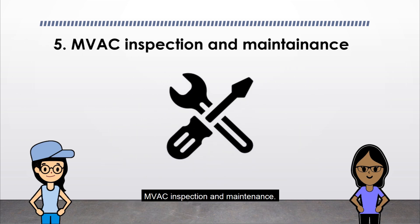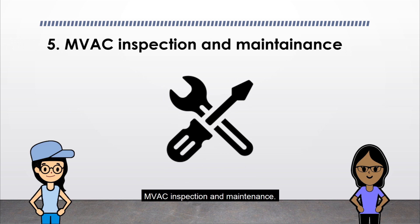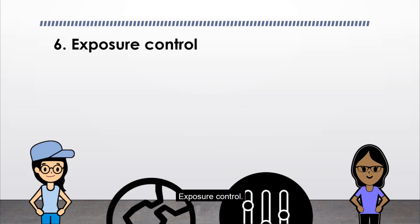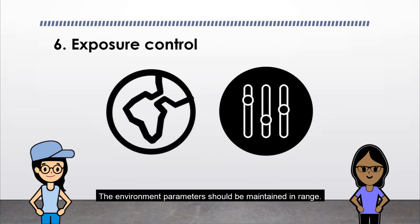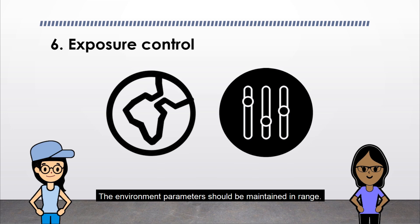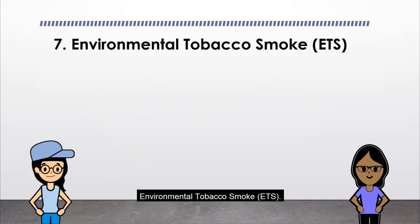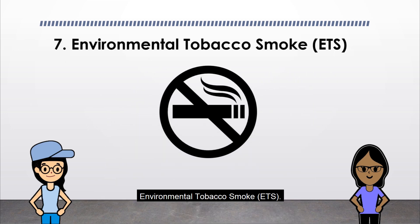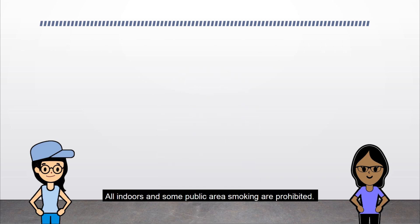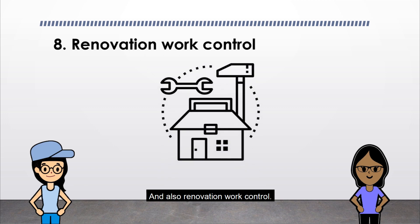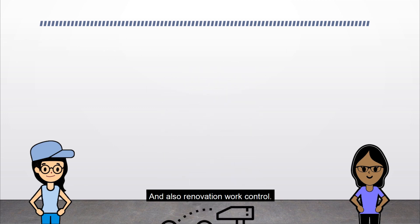Fifth, MVAC inspection and maintenance. Sixth, exposure control, where the environment parameters should be maintained in range. Seventh, environmental tobacco smoke (ETS) — all indoors and some public area smoking are prohibited. And eighth, renovation work control.